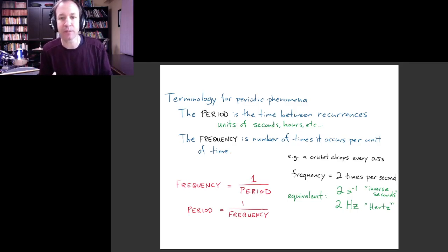Let me give you an example. Let's say there's a cricket and the cricket is chirping in a regular periodic way, and the cricket chirps every half of a second. Well, then the period of that chirping we would say is half of a second. But another way of describing that periodic event is to say that the cricket chirps twice per second. That's what we would call the frequency.